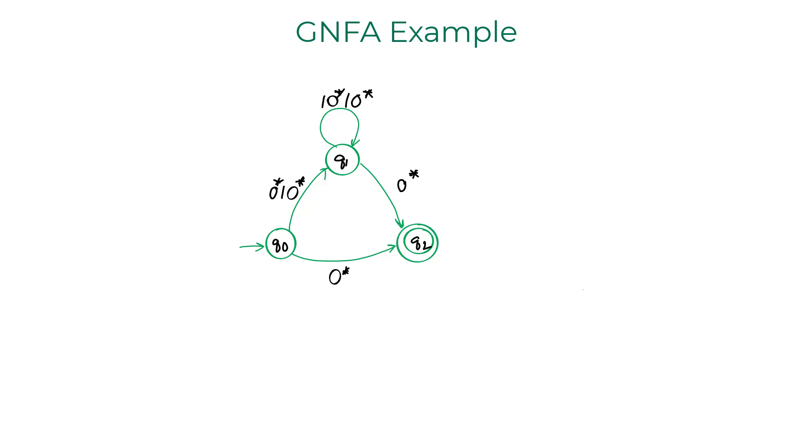An accepting run for the string 11110100 on this GNFA is from q0 to q1 on 1, q1 back to q1 on 11, q1 back to q1 on 101, and q1 to q2 on 00. I will pause here for a moment and let you observe the acceptance path of the given string in this GNFA.